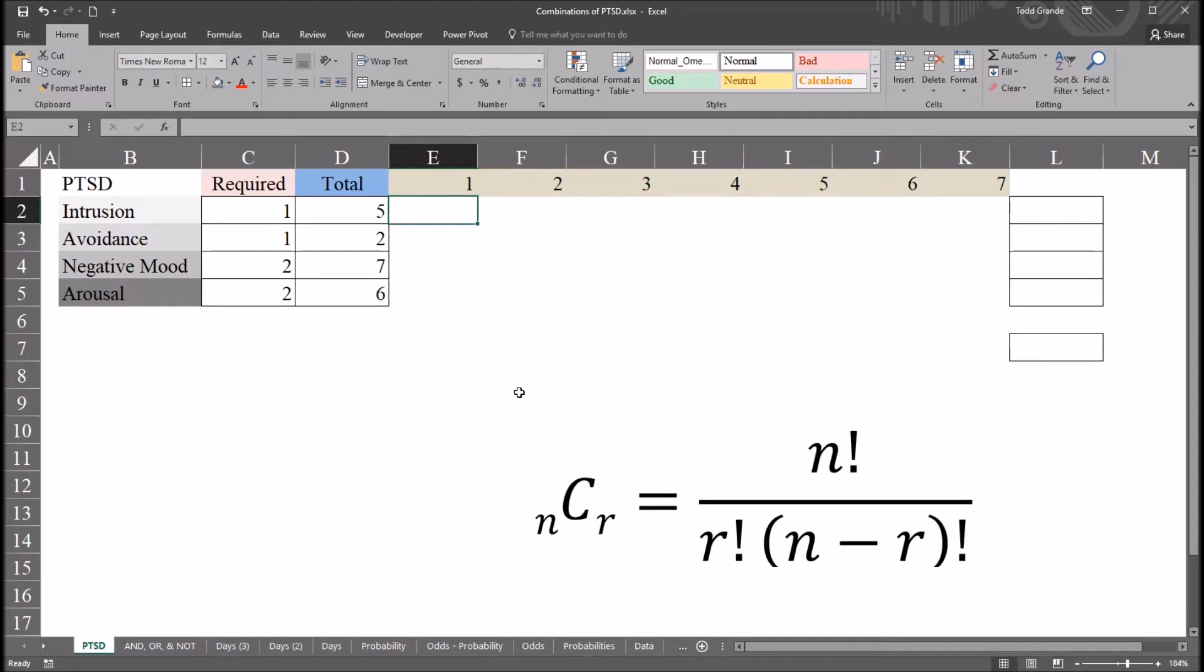This is a calculation of the number of combinations without replacement. And I have that equation here. Combinations without replacement equals n factorial divided by r factorial times n minus r factorial. So n is the total number of items, and r is the number of items that you want to sample. The without replacement piece means that once a symptom is selected, it can't be put back and selected again.